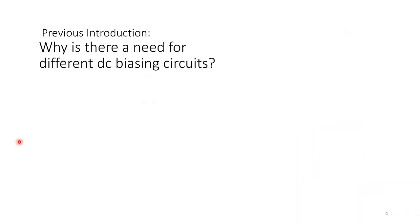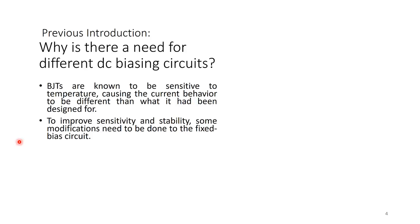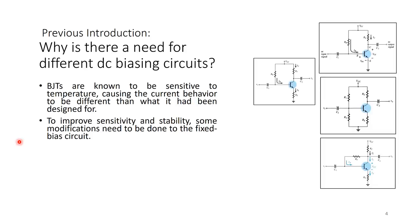Before we go on to the circuit analysis, it is important to understand why we need different DC biasing circuits. BJTs are sensitive to temperature, causing current behavior to differ from what was designed. If using a BJT as an amplifier, it must be biased at a specified Q-point that we don't want to change. To improve sensitivity and stability, modifications need to be made to the fixed bias circuit.